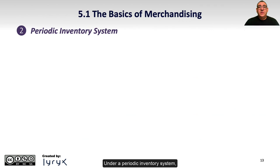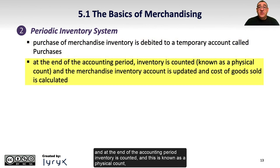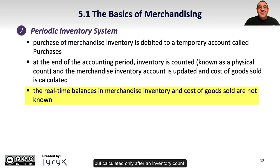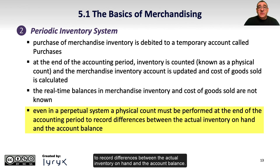Under a periodic inventory system, the purchase of merchandise inventory is debited to a temporary account called purchases. At the end of the accounting period, inventory is counted — this is known as a physical count — and the merchandise inventory account is updated and the cost of goods sold is calculated. The real-time balances in merchandise inventory and cost of goods sold are not known, but calculated only after an inventory count. Even in a perpetual system, a physical count must be performed at the end of the accounting period to record differences between the actual inventory on hand and the account balance.